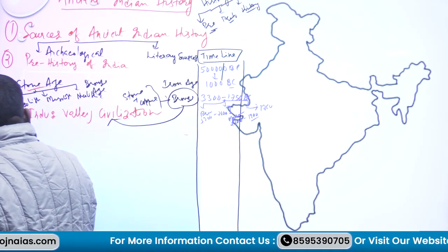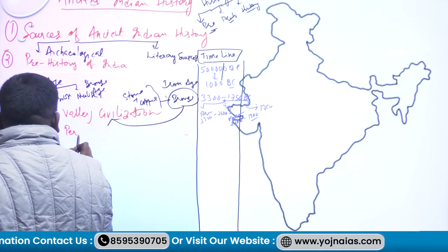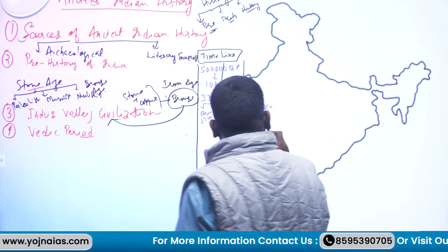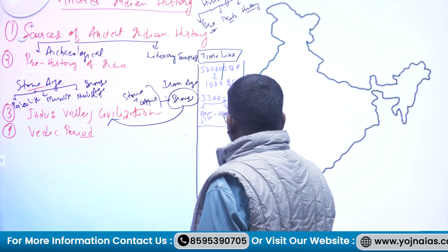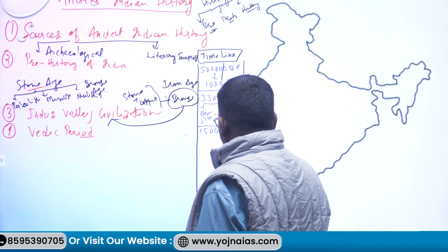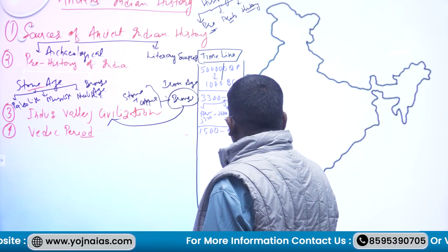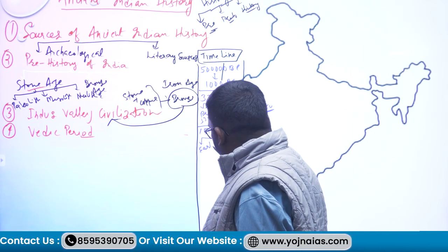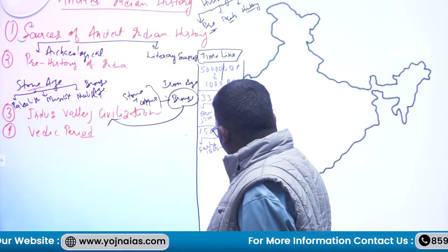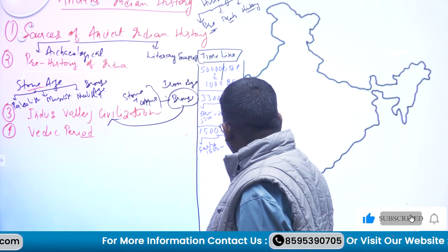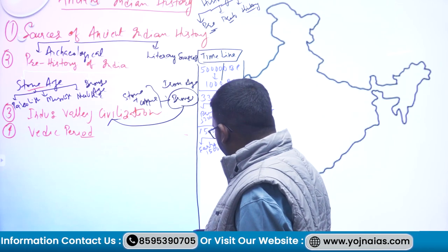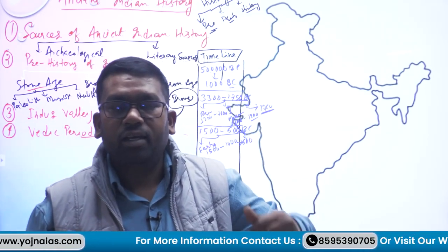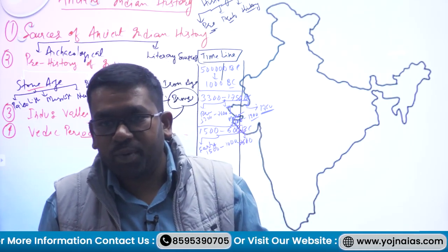The fourth chapter is the Vedic Period, which comes after the Indus Valley Civilization. The Vedic Period runs from 1500 BC to 600 BC and is divided into two parts: the Early Vedic Period (1500–1000 BC) and the Later Vedic Period (1000–600 BC). There are major differences between these two sub-periods.